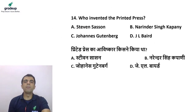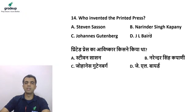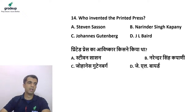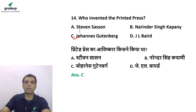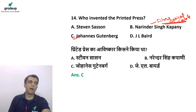Next question: who invented the printing press? Options are Stephen Sesson, Narendra Singh Kapani, Johannes Gutenberg, and J.L. Baird. Most of you answered correctly. The answer is option C — Johannes Gutenberg, who invented the first printing press. Note: Narendra Singh Kapani was the one who invented the fiber optical cable.